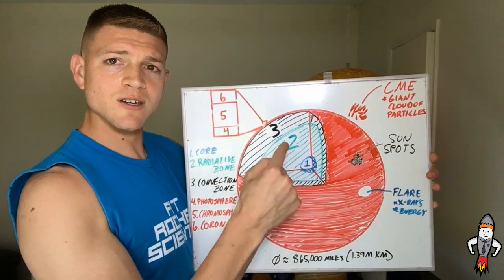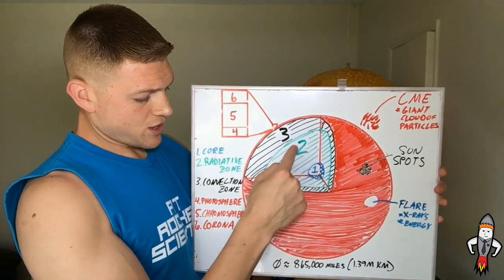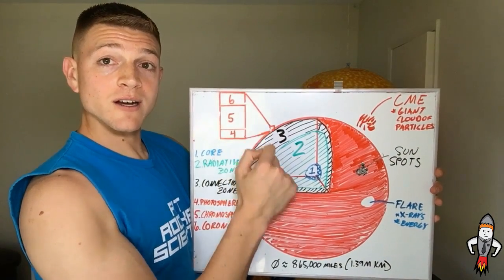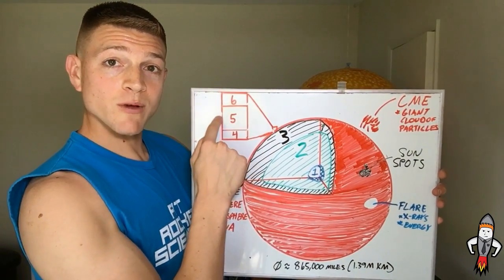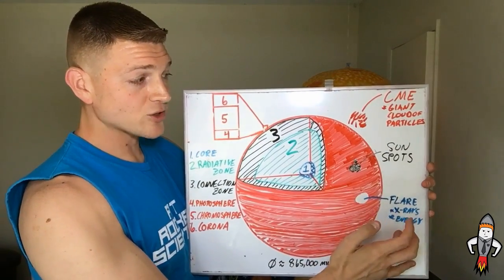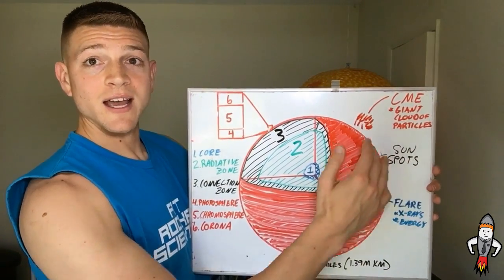But so we have three layers of the inner Sun: the core, the radiative zone, and the convection zone. And then the three outer layers are the photosphere, the chromosphere, and the corona. And then on the outside of the corona we can have solar flares, sunspots, and CMEs.